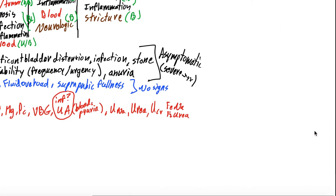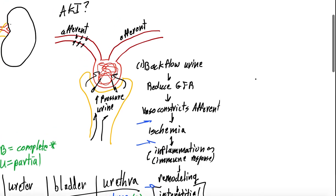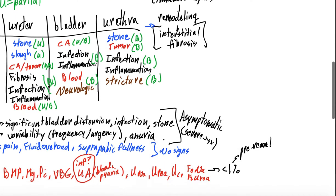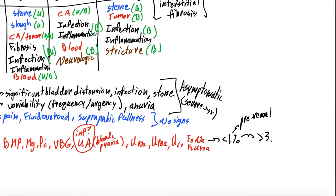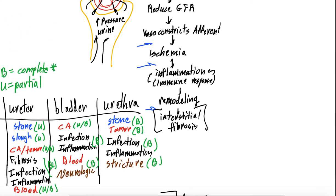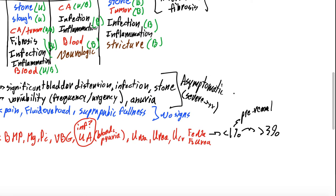In obstructive uropathy, the FeNa often starts at less than 1% — a pre-renal pattern — because of the afferent arteriole vasoconstriction causing reduced blood flow. As time goes on, the FeNa rises as you transition into the intrinsic phase with inflammation, remodeling, and fibrosis of the interstitium. So the FeNa isn't very helpful: if early it might be low; if later, high. Same with FeUrea. Although textbooks say to send these for any AKI, in this case they are of very limited value.